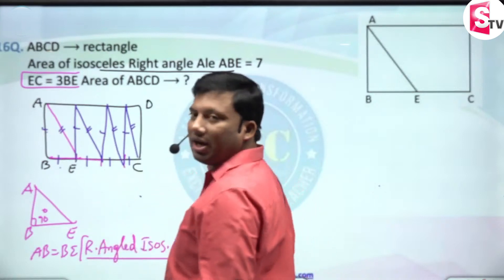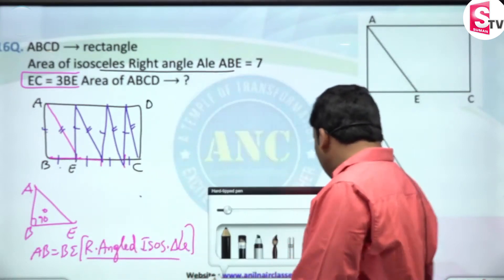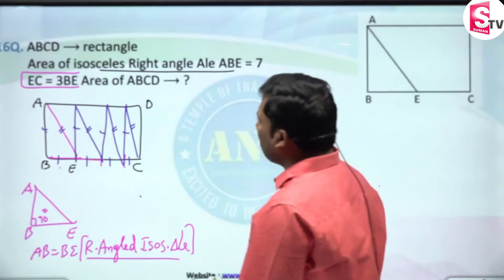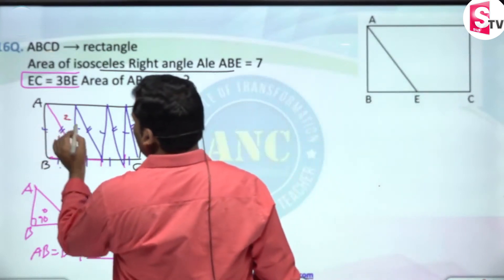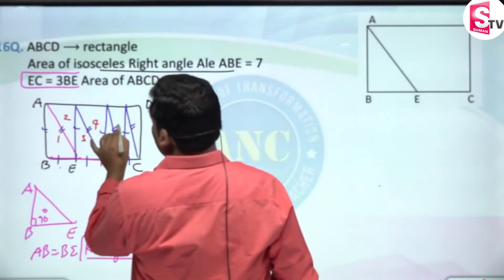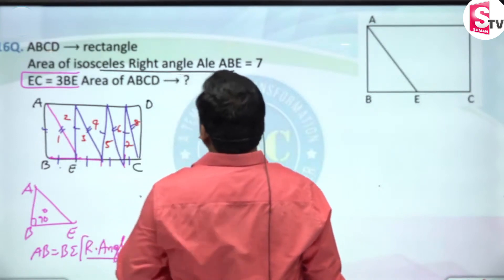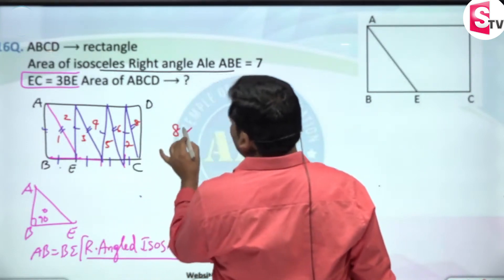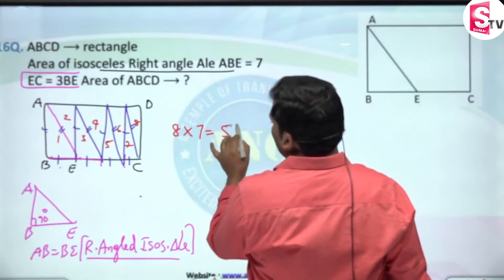All are similar right-angled triangles. So totally, how many do we get? 1, 2, 3, 4, 5, 6, 7, 8 — we get 8 right-angled triangles. The area of the right-angle triangle is given.